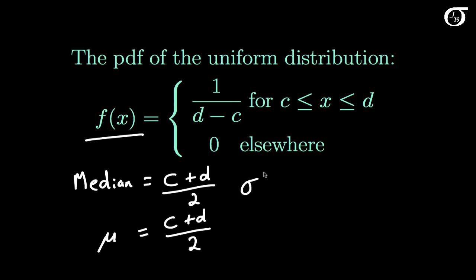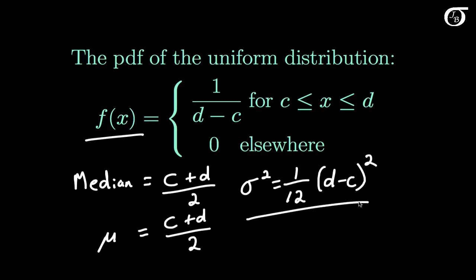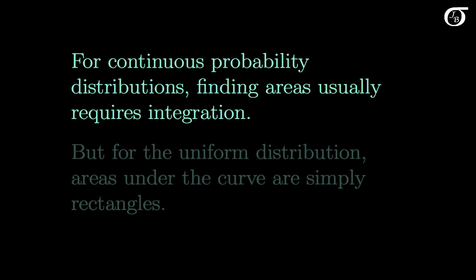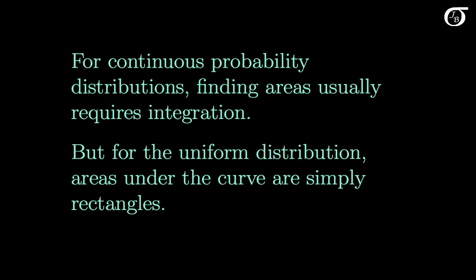The variance requires a little calculus to find. It is simply equal to 1 over 12 times d minus c squared. For continuous probability distributions, finding areas under the curve usually requires integration. But for the uniform distribution, areas under the curve are simply rectangles, so we can find them using simple rectangle areas without integration.